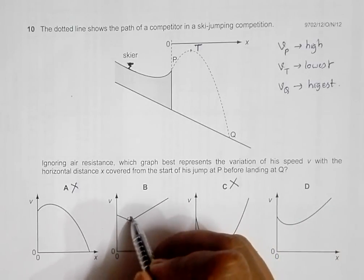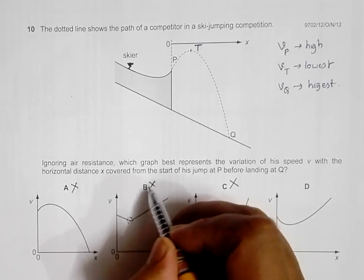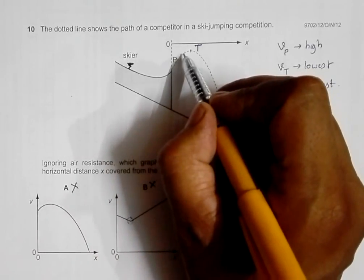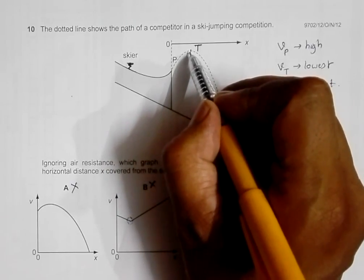So this is also not possible. So what is happening here is the change of velocity is gradual. It goes decreasing, goes to least value, and then again increases.